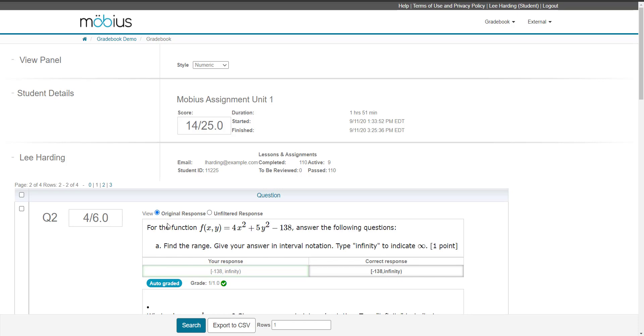And one more thing that you can do from this page is export your grade results to a dot CSV file by clicking export to CSV. And this provides a locally saved version of your grade results. And that's how you view the details of a graded activity in Mobius as a student.